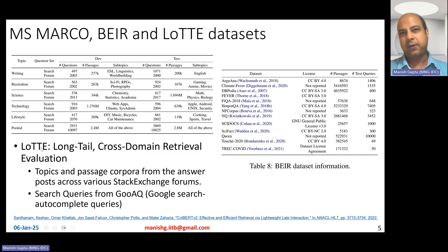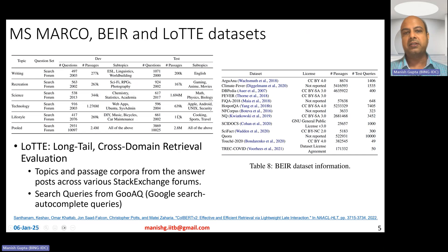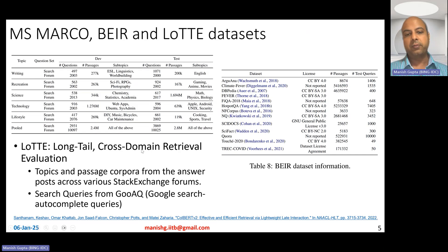LOTTE, pronounced 'Latte', stands for Long-Tail Topic-Stratified Evaluation for IR. Topics and passages were obtained from Stack Exchange forum posts across five domain categories: writing, recreation, science, technology, and lifestyle — comprising subtopics like ESL, linguistics, world building, sci-fi, chemistry, and web apps. They also include search queries obtained from the GOO-AQ dataset, which is Google's search autocomplete queries dataset.